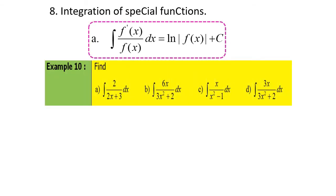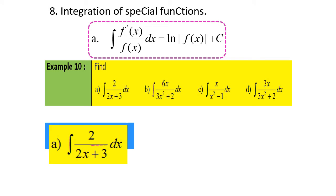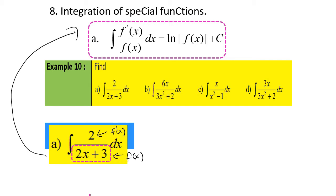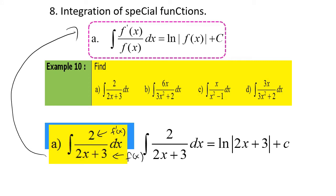This is a simple example. Find the integration of 2 over 2x plus 3 dx, for part A. We try to assume the denominator 2x plus 3 is f(x). When we differentiate f(x) = 2x plus 3, we have 2, so 2 here is f'(x). That's why we may apply this rule, and we will have ln|2x plus 3| plus c.